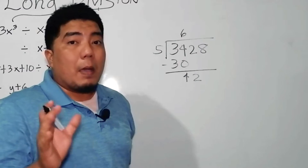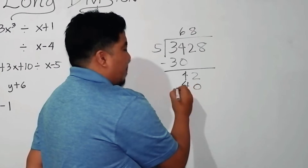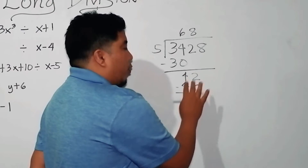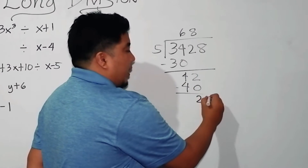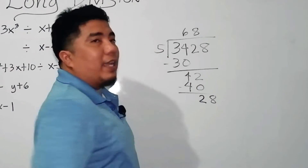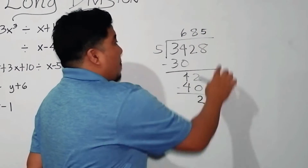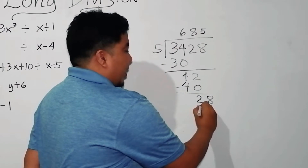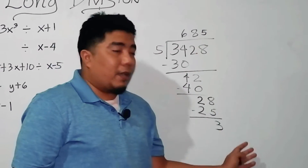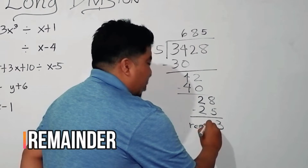42 will then be divided by 5, and the answer is 8. 8 times 5, that is 40. Then you follow the same procedure and subtract. So 42 minus 40 is 2. You bring down the last digit, which is 8, and that gives you 28. This 28 will then be divided by your divisor, which is 5. 28 divided by 5, the answer is 5. 5 times 5, that is 25. If you subtract this, you will have 3. Nothing to be brought down, so therefore this 3 is your remainder.